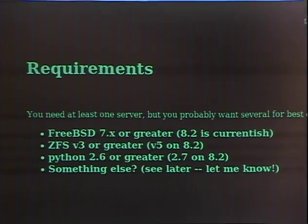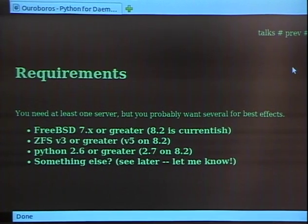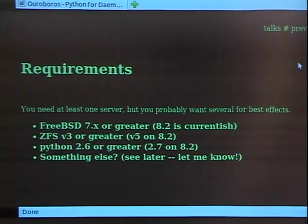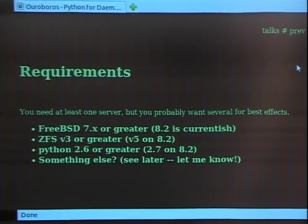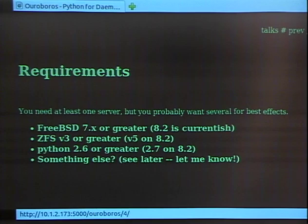For my system, you will need FreeBSD. I started working with FreeBSD 7 — that's the first FreeBSD to have ZFS built into it. You're going to want ZFS version 3 or greater. Most things now are about version 5. There's a version 6 file system about to come out on the pipe, so it's all constantly moving, but you just got to stay up to date. Or you could try yourself on another system, which we'll talk about later.